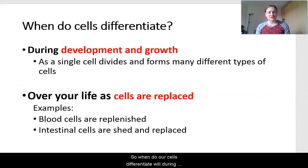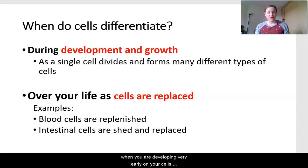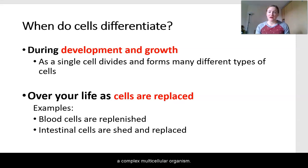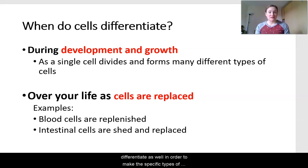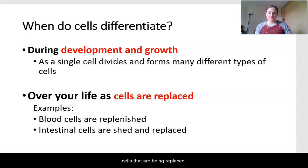When do our cells differentiate? During development and growth, very early on, your cells differentiate to make all of the different parts that make you a complex multicellular organism. And over your life, as cells are replaced, those new cells need to differentiate as well in order to make the specific types of cells being replaced.